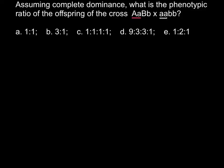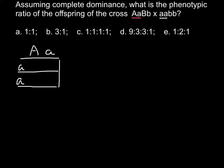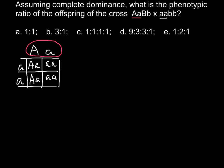Let's now build a Punnett square. We would have one parent on top — that is capital A, small a — and another one on the side, which is small a, small a. When we cross these two allelic pairs, we get genotypes: capital A small a, small a small a, capital A small a, and small a small a. The parent on top is going to have red colored flowers and the one on the side white colored flowers. As you can see, 50% of the progeny would have red colored flowers and 50% would have white colored flowers.